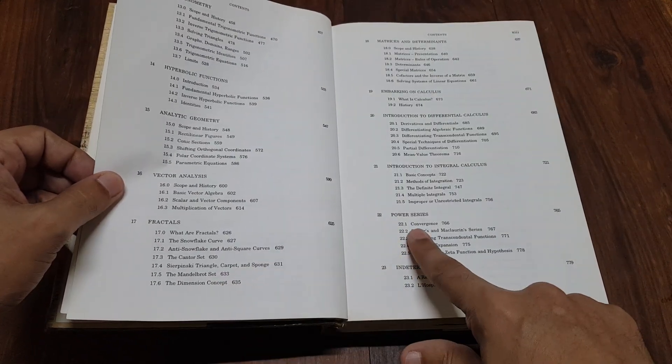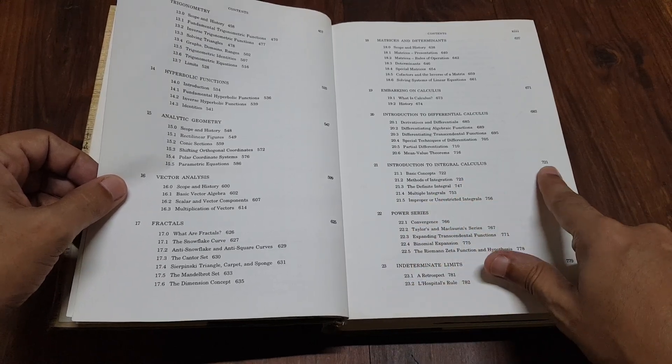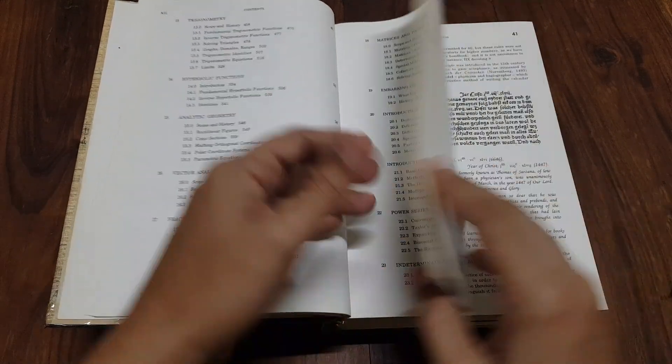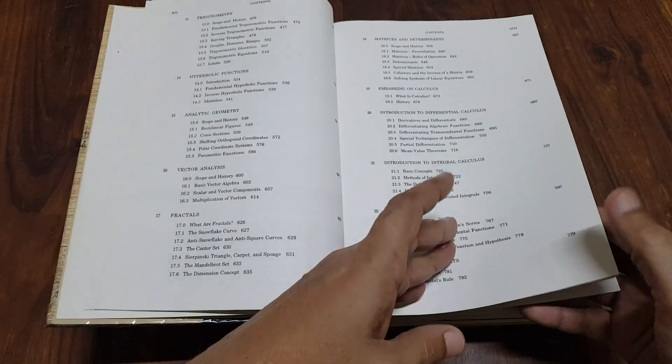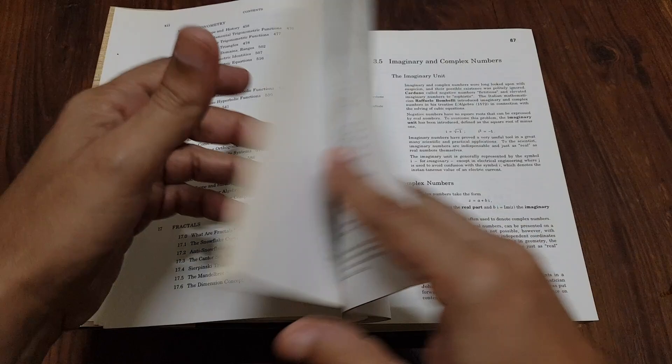Gullberg employs a narrative style that blends historical context with mathematical exposition. The book includes numerous examples, illustrations, and problems to engage readers and facilitate understanding.